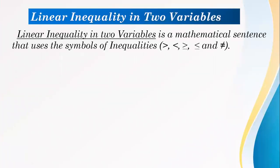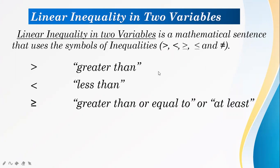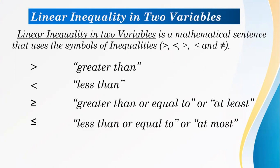A linear inequality in two variables is a mathematical sentence that uses the symbols of inequalities. These are the symbols: greater than, less than, greater than or equal to (or at least), less than or equal to (or at most), and not equal to.